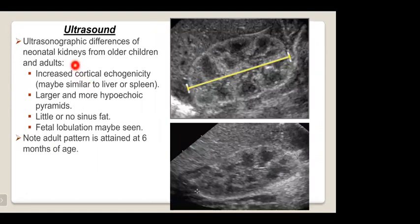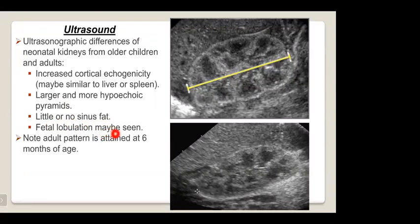Neonatal kidneys differ from adult kidneys on ultrasound: they show increased cortical echogenicity, which may be similar to the liver or spleen, larger and more hypoechoic pyramids, and little or no sinus fat. Fetal lobulation may be seen in the fetus. The adult pattern is attained at six months of age.